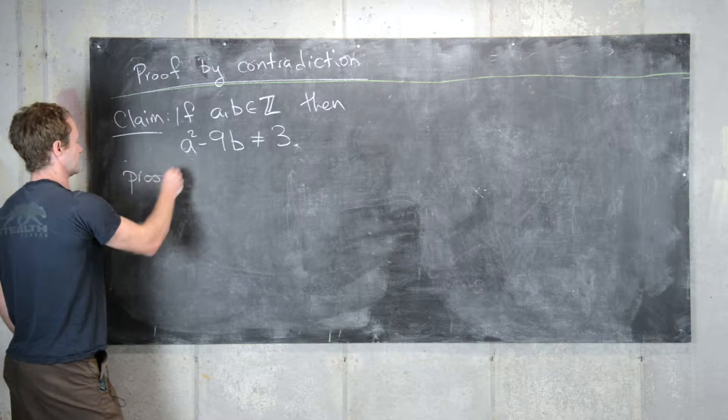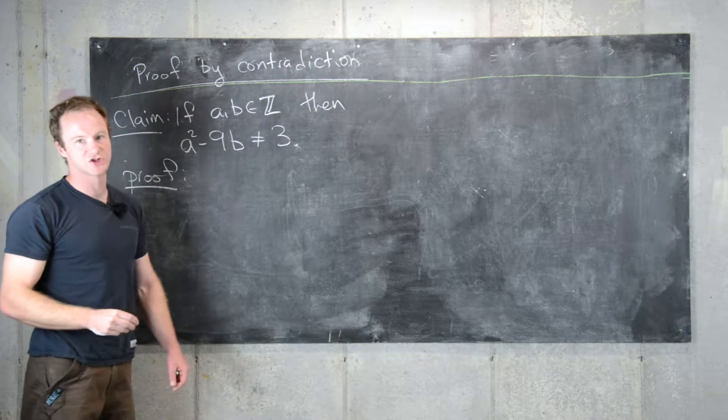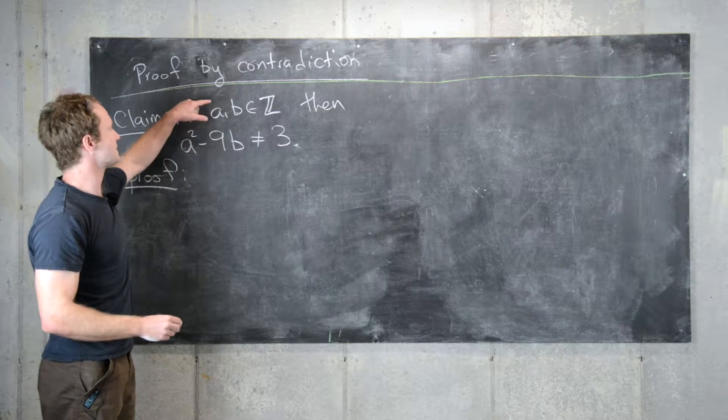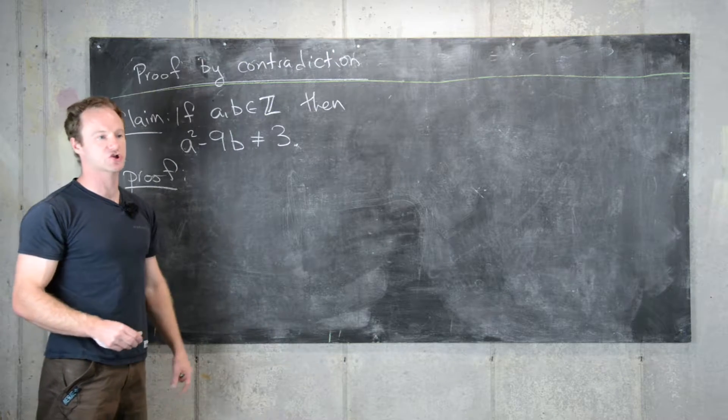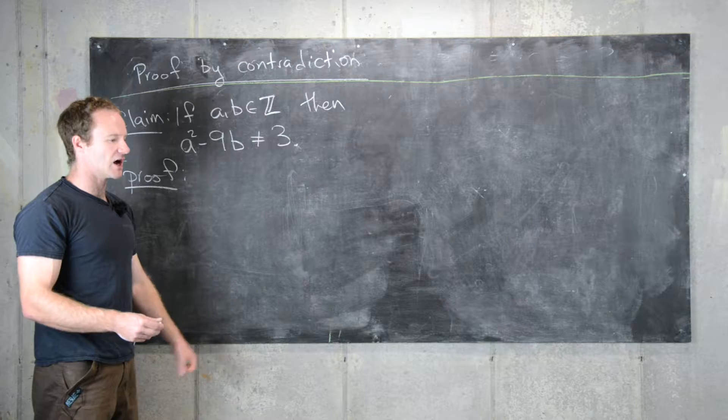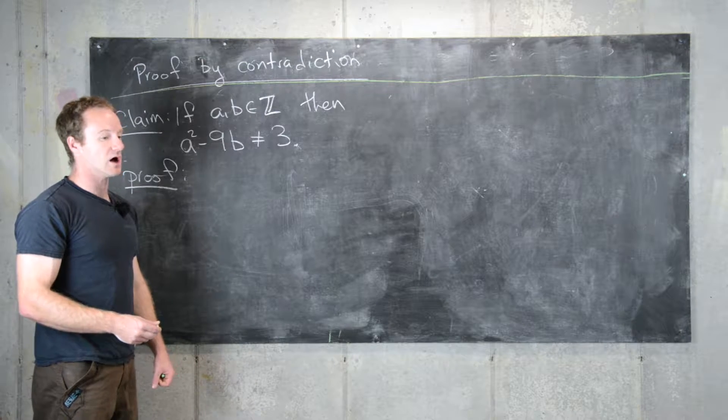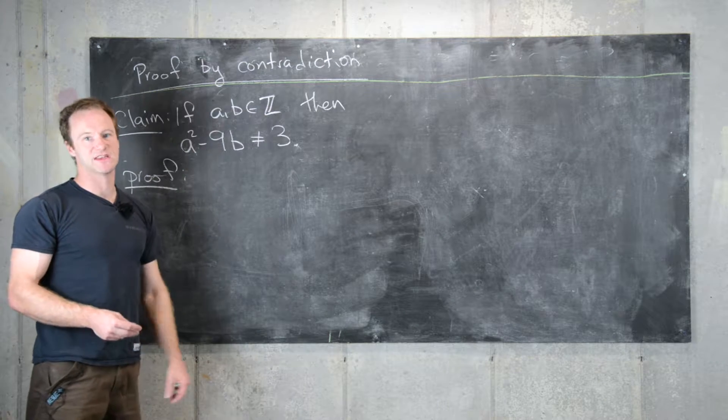As a reminder, to prove things by contradiction, we want to suppose that the hypothesis and the conclusion are true, and then end up with some sort of contradiction to a known fact, which is maybe not part of this statement at all.